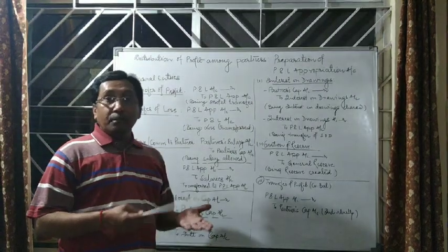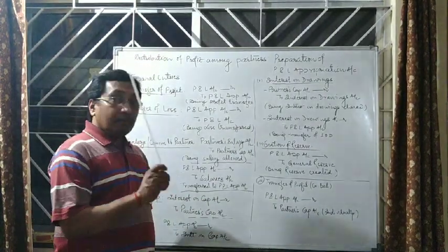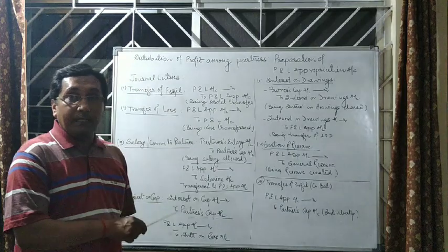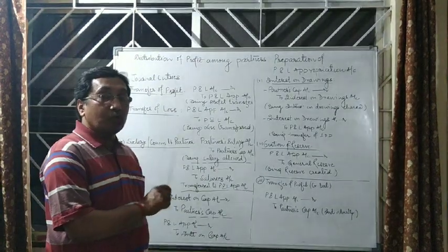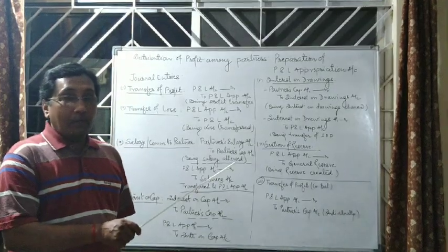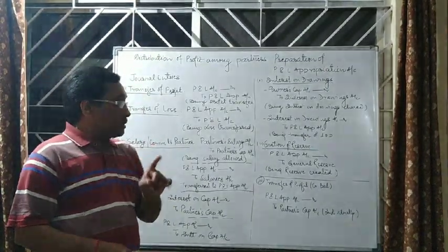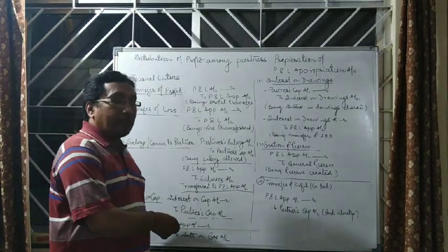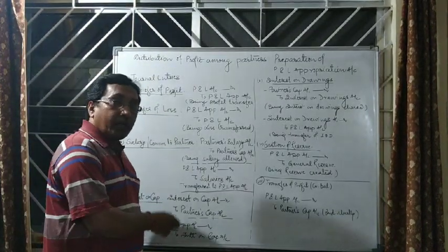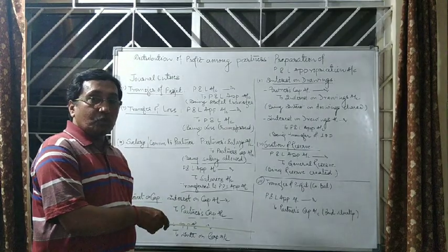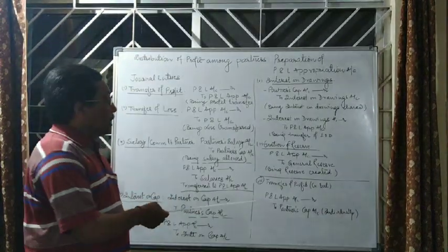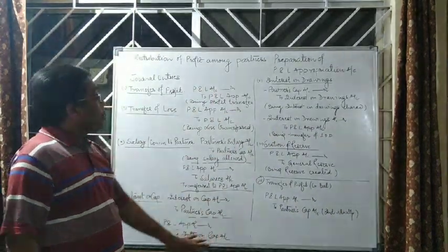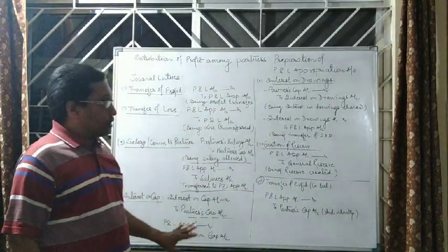Finally, you may find some balance remaining in the profit and loss appropriation account. Mind it — profit and loss appropriation account will not show a debit balance, because in case of loss we don't make any appropriation; we only make appropriation to the extent of profit available. Hence, the profit and loss appropriation account will show a credit balance, and this credit balance is known as divisible profit. This is distributed among partners in their agreed ratio, or equally if no ratio is given.